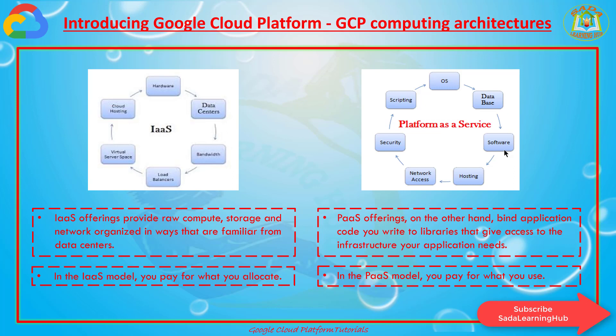You got three points here. Infrastructure as a service provides raw compute, storage, and network organized in a way familiar from data centers — and in that model, you pay for what you allocate. Platform as a service binds application code you write to libraries that give access to the infrastructure your application needs — and in that model, you pay for what you use. Software as a service covers services like Gmail and Drive — all provided by Google as software as a service.